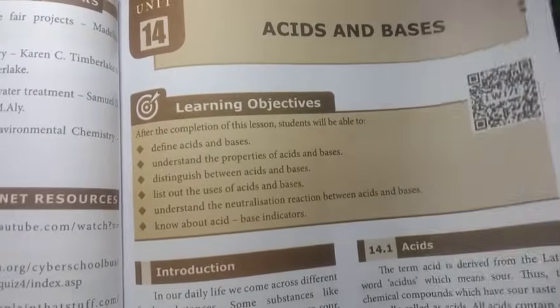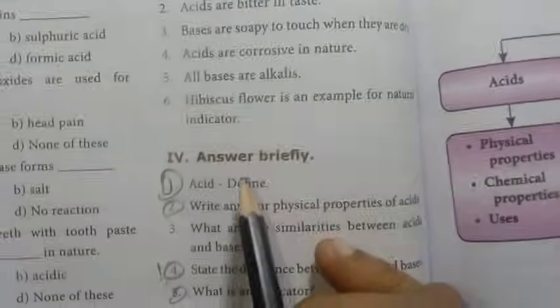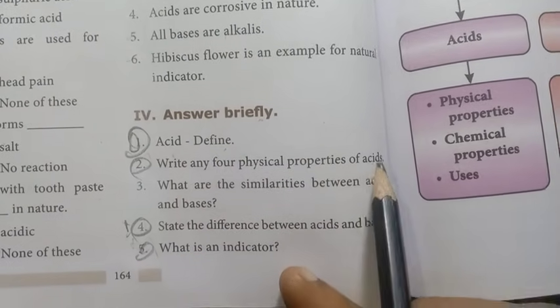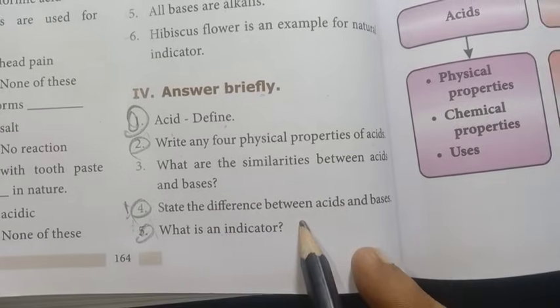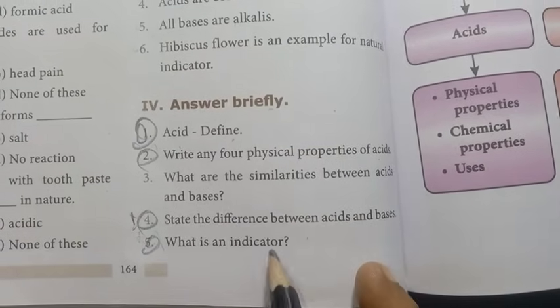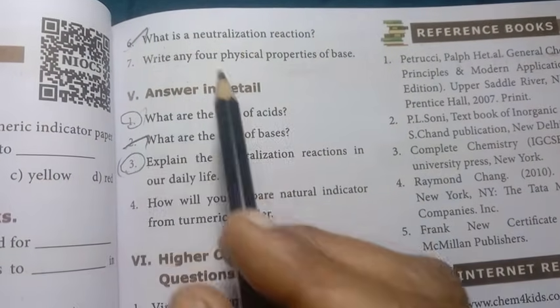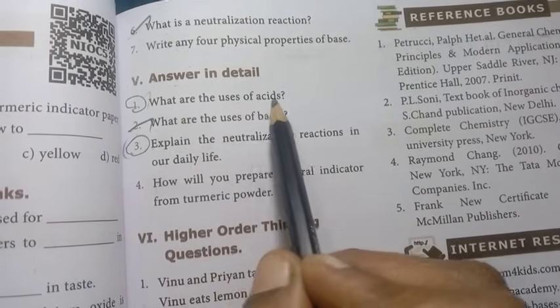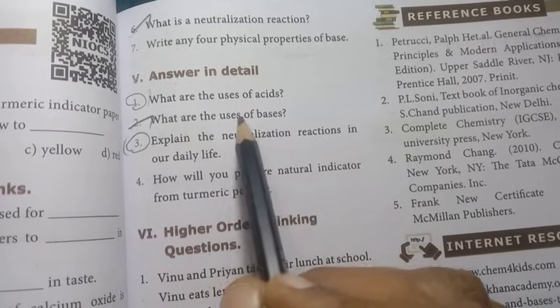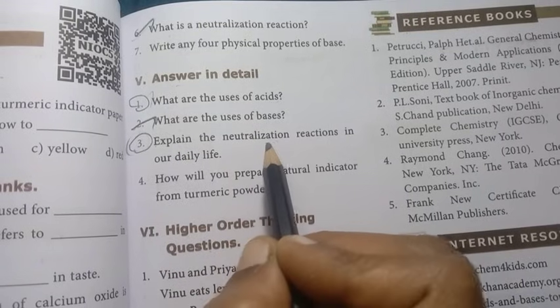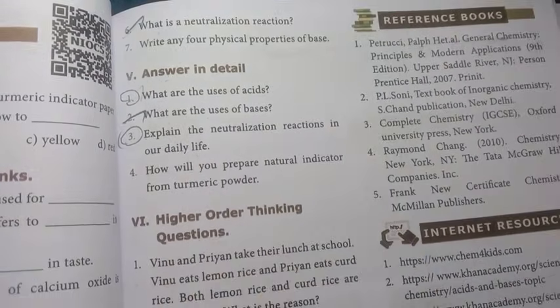Unit 14: Acids and Bases, page number 164. Answer briefly: Define acid. Write any four physical properties of acids. State the difference between acids and bases. What is an indicator? — first, second, fourth and fifth important. What is a neutralization reaction? — previous year annual question. Answer in detail: What are the uses of acids? — important. What are the uses of bases? — previous year annual question. Explain the neutralization reactions in our daily life — important question.